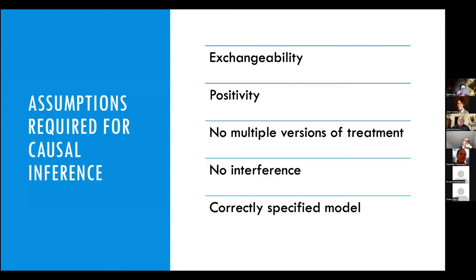If these assumptions are violated, the answer we get won't be the correct answer to our question. We need exchangeability — that people with one level of fluoride exposure would have had the same average outcome as people with another level had they been exposed to that level. We also need positivity — a positive probability for each person of being exposed to all fluoride levels. No multiple versions of treatment means that being exposed to 0.7 ppm of fluoride corresponds to the same type of intervention for everyone. No interference means fluoride levels in one water system don't affect births in a different water system service area. Finally, we need a correctly specified model.